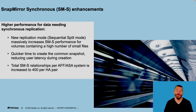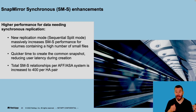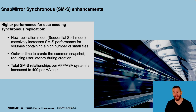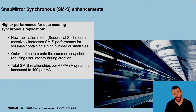We've also tuned SnapMirror Synchronous to allow for a quicker time to create a common snapshot across the two sites. By doing that, it reduces or minimizes any chance of latency being introduced into applications using SnapMirror Synchronous. And because of these enhancements, we've upped the number of synchronous replications supported up to a total of 400 replications per HA pair — allowing for some pretty massive scalability.